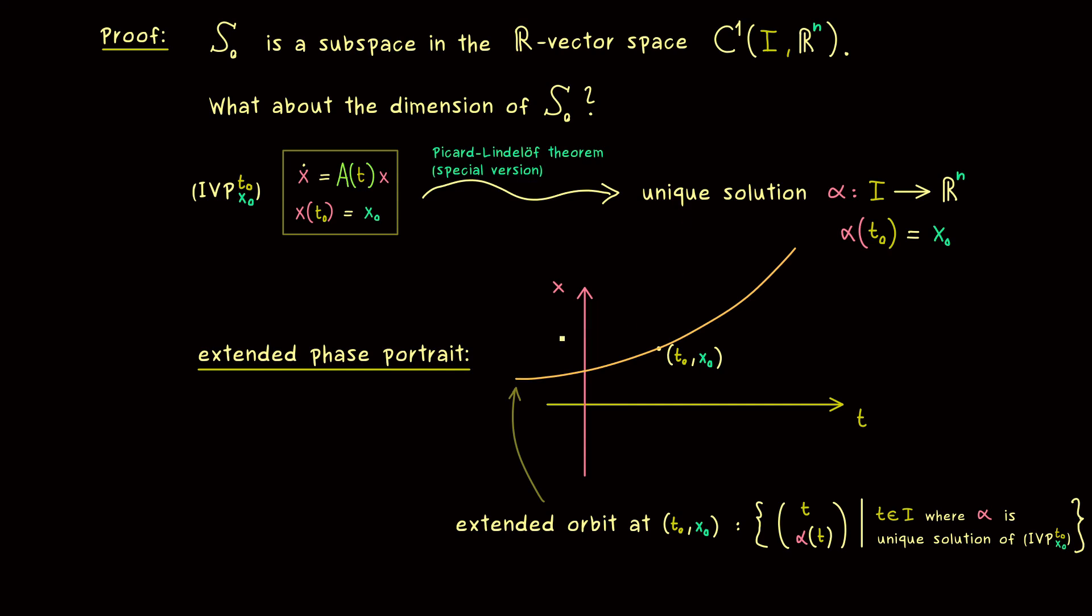Again I put the attribute extended to it to make sure that we don't forget the time variable. This means here in the set we have t and alpha(t) together. And then we just have to go through all the points t in the interval I. And as always for the definition of the orbit, we have to choose the unique solution for the initial value problem. Hence the extended orbits are well defined for every point. And because we have unique solutions, we don't have any crossings. So for example, the whole extended phase portrait here could look like this. And now we get a nice fact, since we have included the time variable here. We get that all the orbits go to the right hand side. Simply because we always mark what happens when t increases.